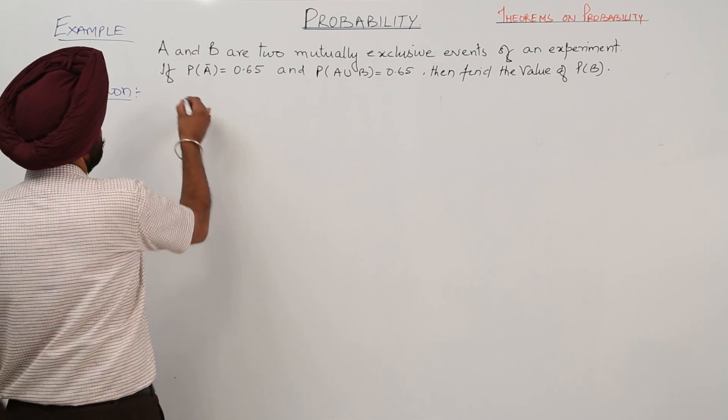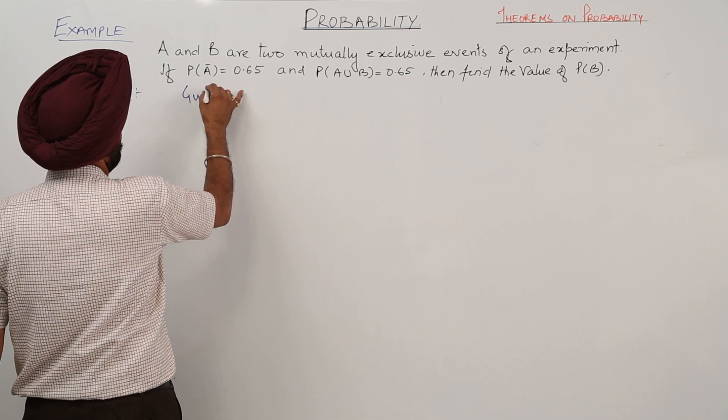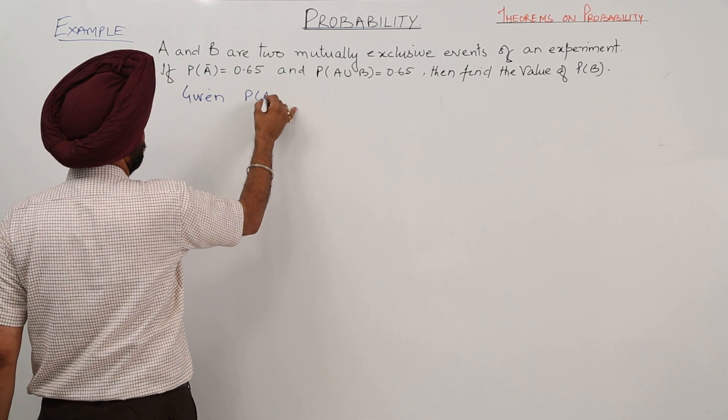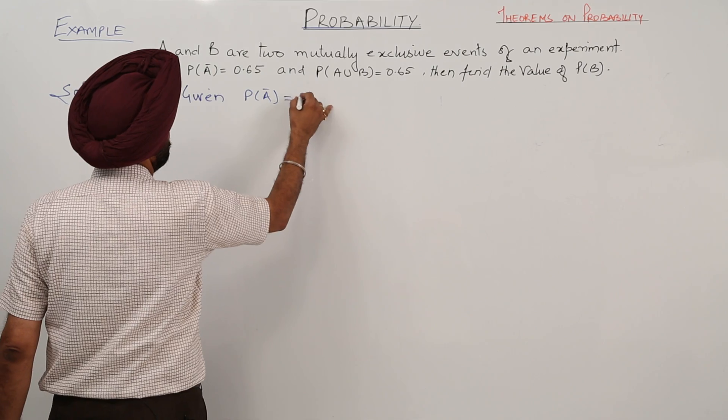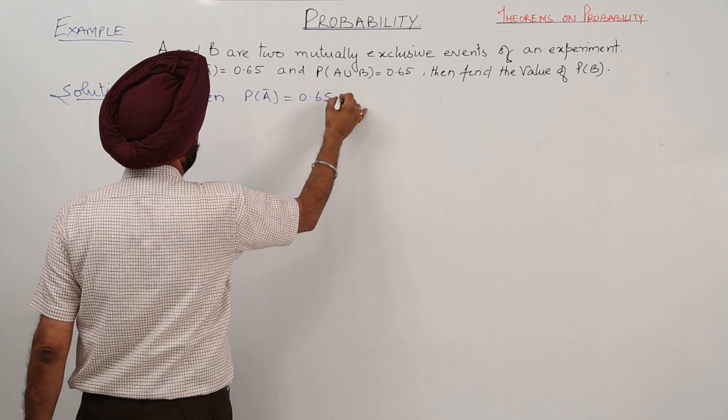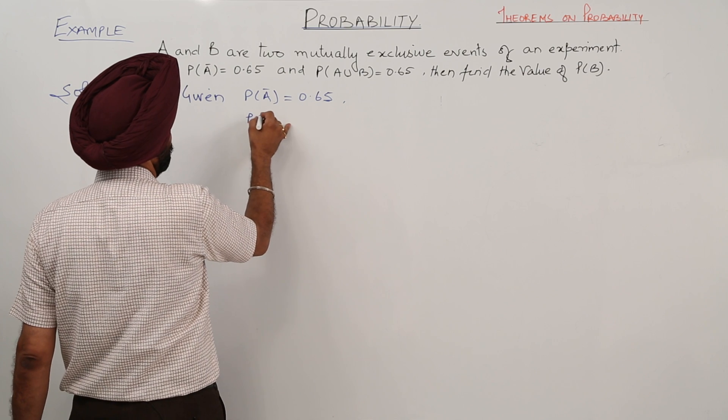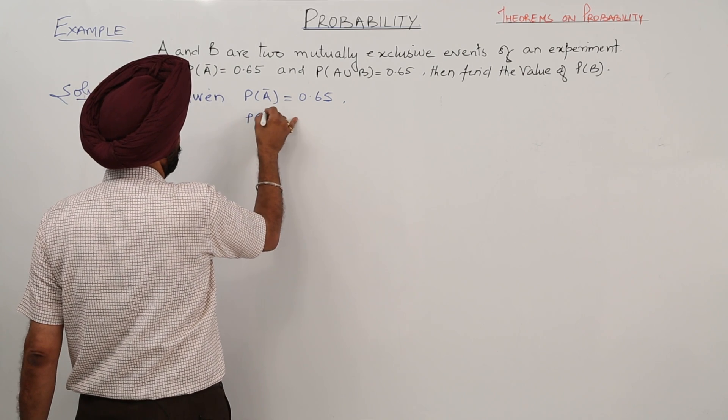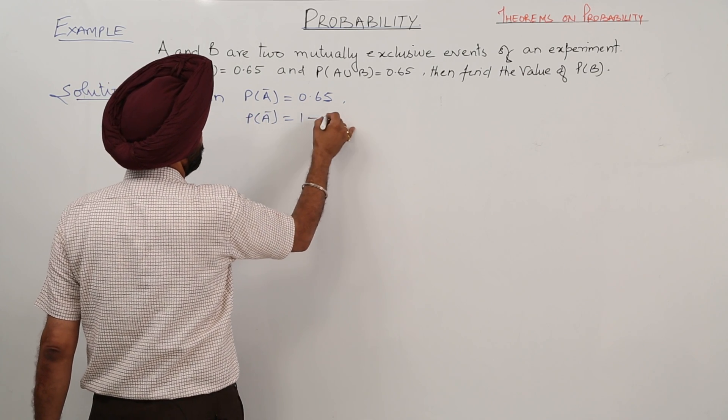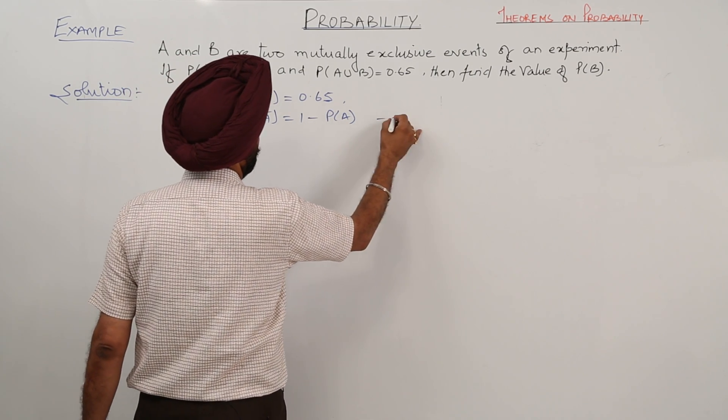Given: P(A') is equal to 0.65. Now, P(A') is equal to 1 minus probability for A.